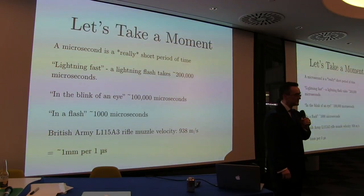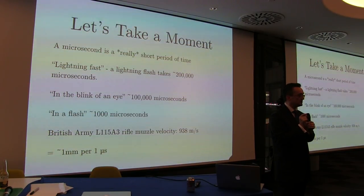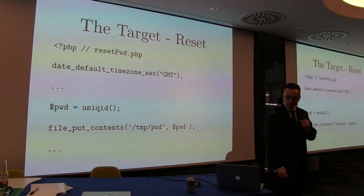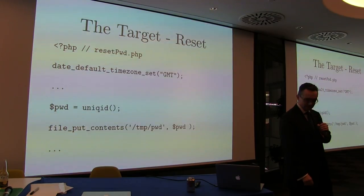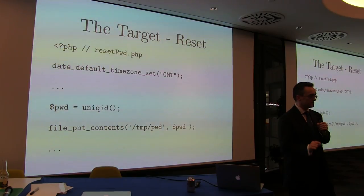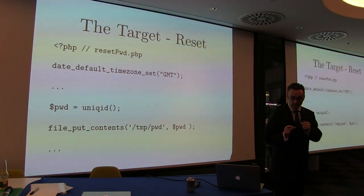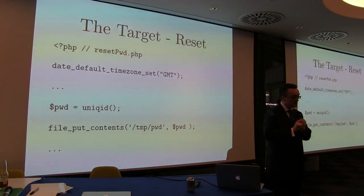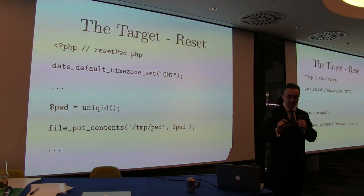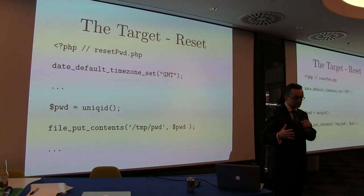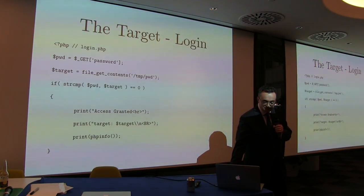Let's take a moment to consider how short an interval of time a microsecond is. Here's our example application: we're going to reset a password using unique_id. We generate the password with unique_id and write it out to a file in /tmp, so we're touching the file system — that adds a little turbulence to our timing.